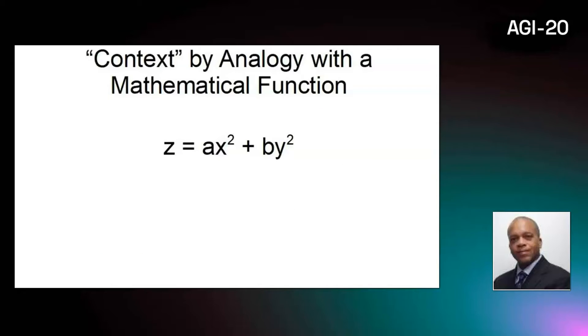As an analogy within mathematics, in the function z equals ax squared plus by squared, the values of the variables x and y are inputs, and the constants a and b are the context.